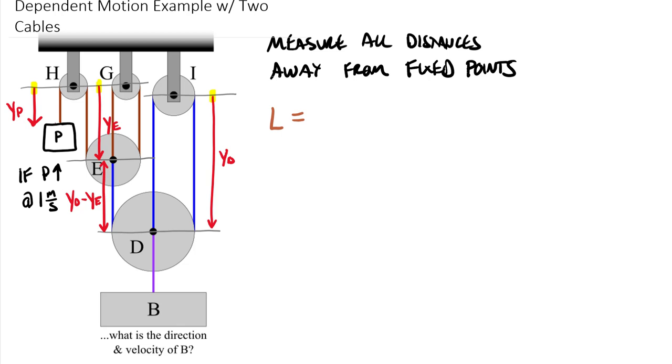I'm going to write these equations corresponding in colors here. The length of the brown cable will be equal to Y sub P. Now there's going to be some distance over the top here, a distance under the bottom here, and additionally distance over the top of G. I'm going to lump all of those together. I'm going to call that my constant, I'll call it C1.